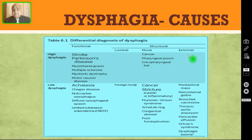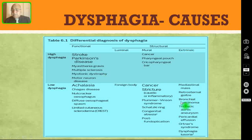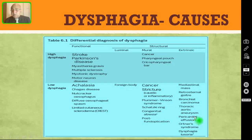Coming to the extrinsic structural causes, these are mediastinal masses causing compression from outside, retrosternal goiter, bronchial carcinoma, thoracic aortic aneurysm, pericardial effusion, Ortner's syndrome, and dysphagia lusoria.